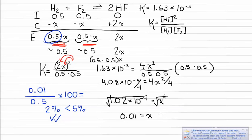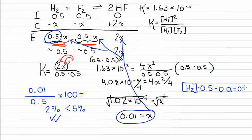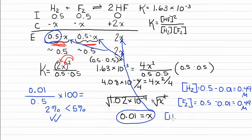Now that we have x, we can plug this value into our equilibrium expressions. The equilibrium concentration of hydrogen equals 0.5 minus x, which gives 0.49 molar. The equilibrium concentration of fluorine equals 0.5 minus 0.01, which equals 0.49 molar. And finally, the equilibrium concentration of HF equals 2 times x, or 2 times 0.01, which is 0.02 molar.